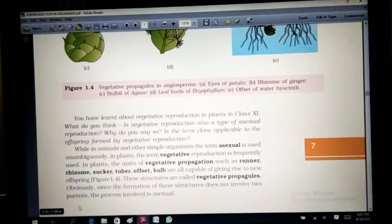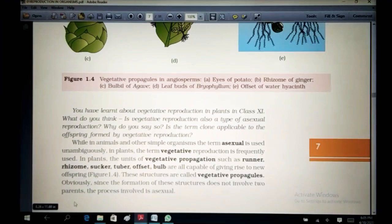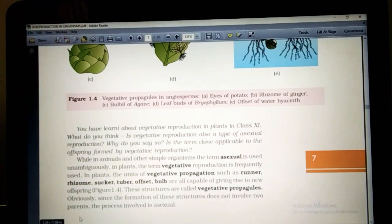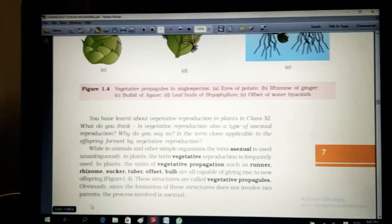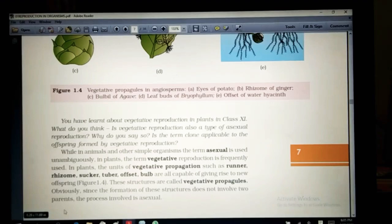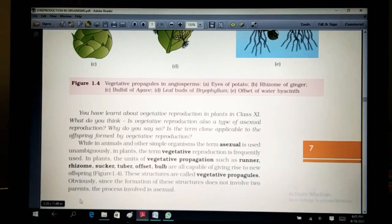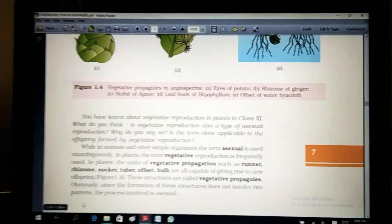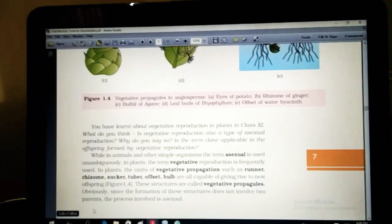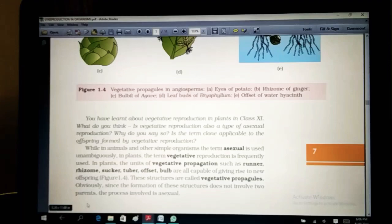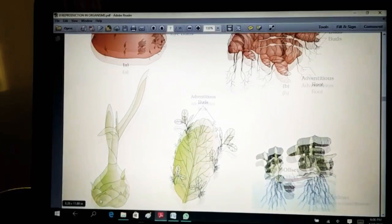Here are the examples where I showed you like the buds. While animals and other simple organisms, the term asexual is used unambiguously. Unambiguously, that means that we can use sometimes when we talk about simple organisms. In plants, the term vegetative reproduction is frequently used. In plants, we use vegetative reproduction in place of the asexual reproduction because there is a better way of saying it. And in plants, the units of vegetative reproduction are such as runners, rhizome, sucker, tuber, offsets, bulb, are all capable of giving rise to new offsprings. The structures are called as the vegetative propagules. Propagules means through which their generation is growing forward. The mode through which they are growing. Obviously, since the formation of these structures does not involve two parents and hence they are asexual.